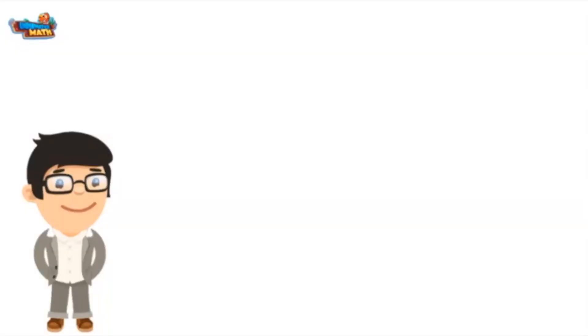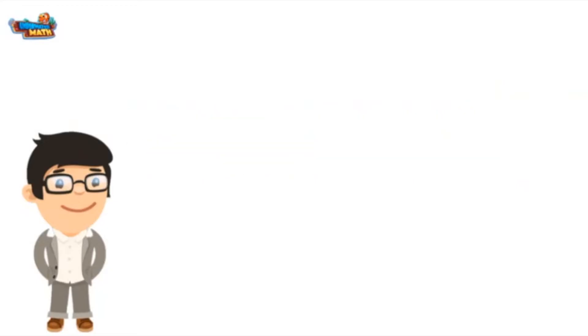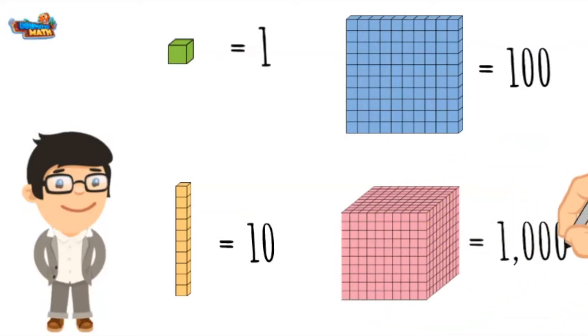Today let's talk about representing whole numbers with base-10 blocks. We will start by reviewing the value of each block. A cube is worth 1. 10 cubes make a group of 10. 10 groups of 10 make a group of 100, and 10 groups of 100 make a group of 1000.